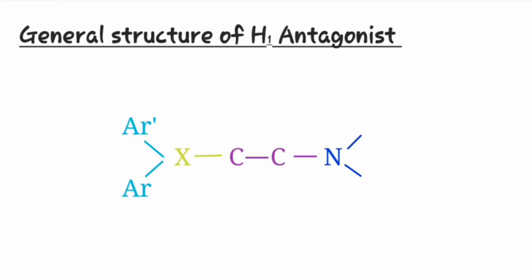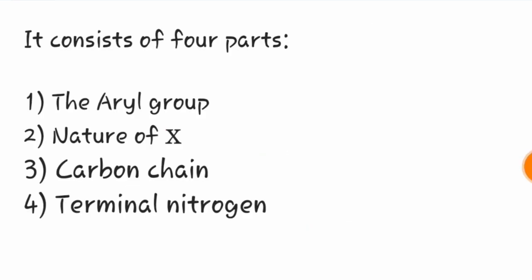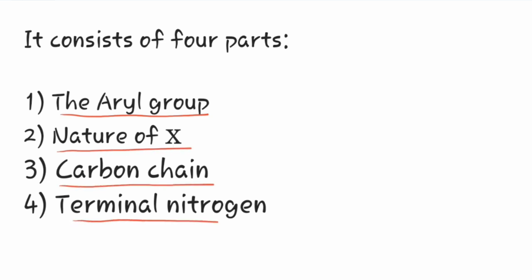Now let us see the general structure of H1 antagonist. The general structure of H1 antagonist can be divided into four parts. The first part is the aryl group, the second part is the nature of X, the third part is the carbon chain, and the fourth part is the terminal nitrogen.